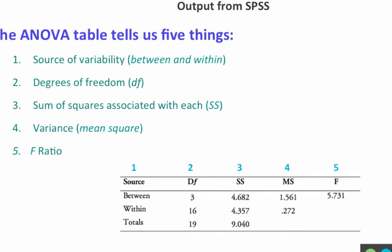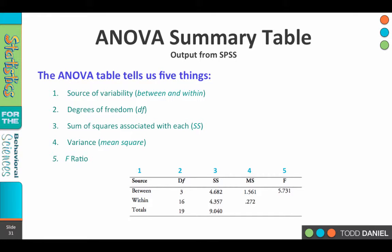The F-ratio is obtained by dividing the variance between by the variance within. In this case we divide 1.561 by 0.272, giving an F-ratio of 5.731. That F-ratio is compared to the critical value from the F-table, and if 5.731 is greater than the critical value, we say there is a statistically significant difference — one group is different from at least one other group — and we need a post-hoc test to tell us which one.